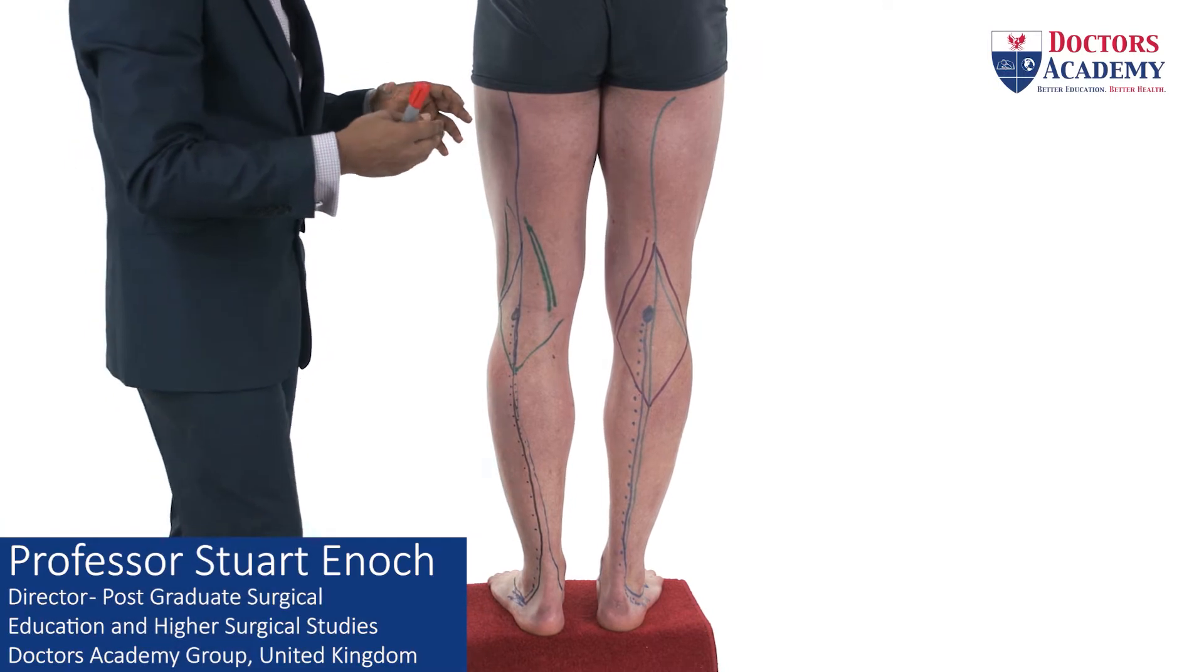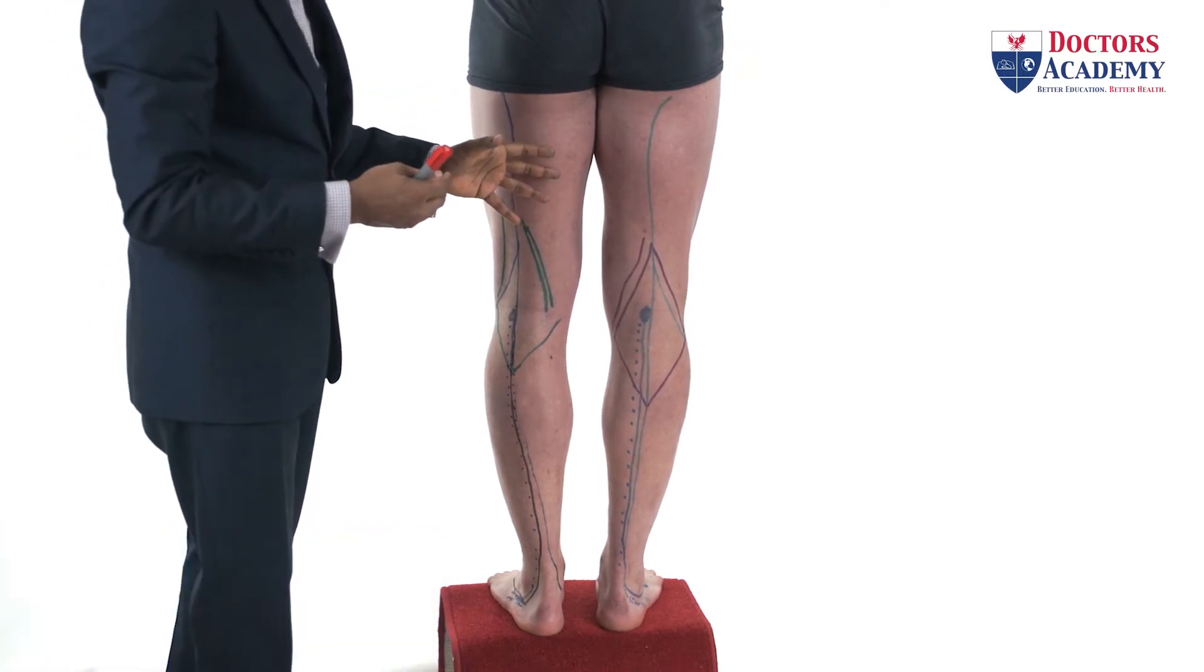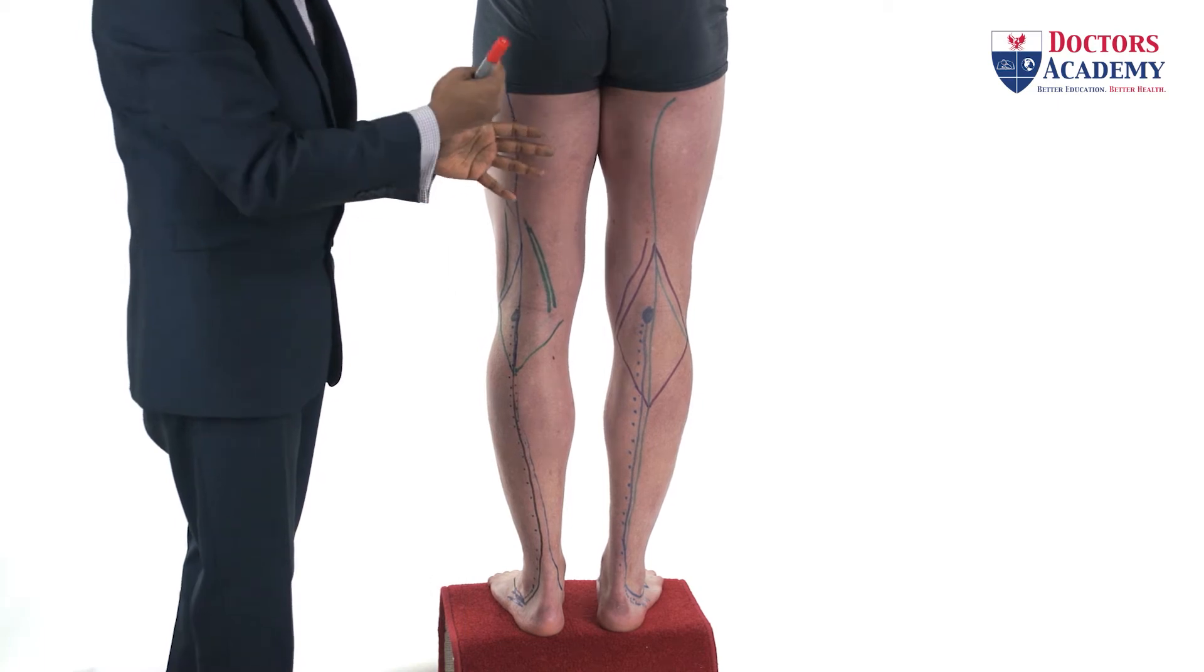We are going to look at the popliteal artery and its surface marking and how it continues from the femoral artery from the anterior compartment.